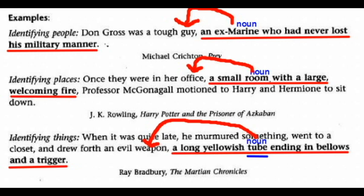The next example identifying places: 'Once they were in her office, a small room with a large welcoming fire, Professor McGonagall motioned to Harry and Hermione to sit down.' The appositive phrase is 'a small room with a large welcoming fire,' renaming 'office.' The actual noun in the appositive phrase is 'room,' but all the other words are additional descriptive words which are part of the appositive phrase.